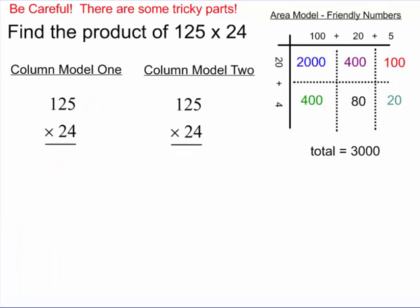So let's try a little larger number. I'm going to multiply 125 times 24. Again, in the upper right corner here, I have the area model with the solution. So let's try column model number one.